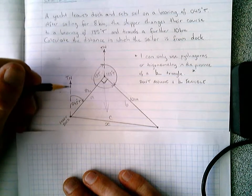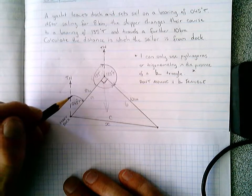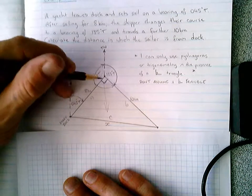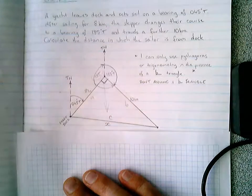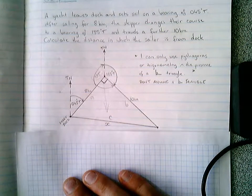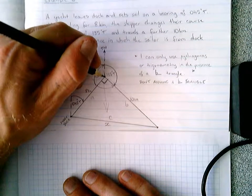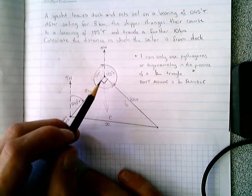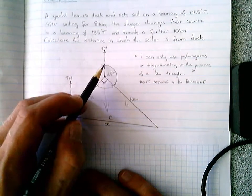I've indicated the true north and the bearing in which the sailor took as well as the distance of 8 kilometers as the first part of their leg. They got to a point and changed direction to a course of 135 degrees from true north,